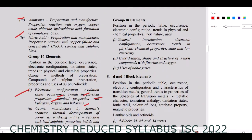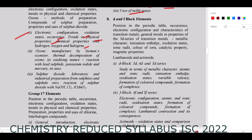For Group 18: the general position, electronic configuration, physical and chemical properties, hybridization, shape and structure of xenon compounds with fluorine and oxygen, and uses of noble gases are present. However, the reactions and equations of xenon (which were in the normal syllabus) are removed from Group 18.